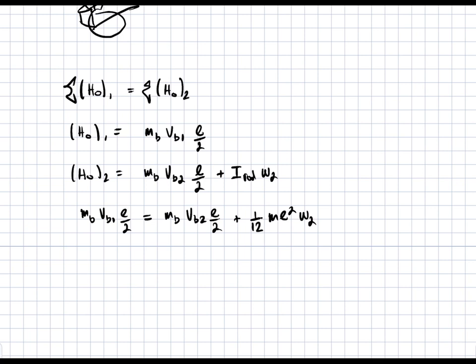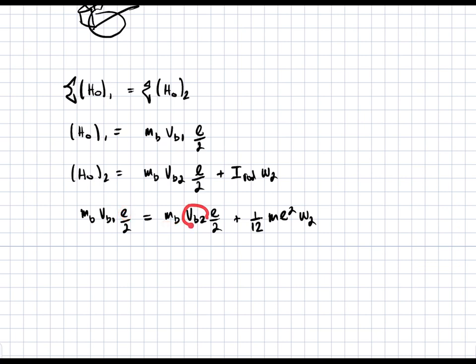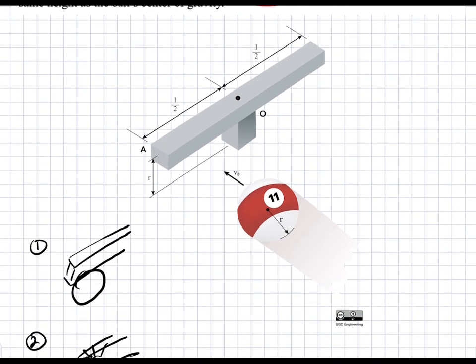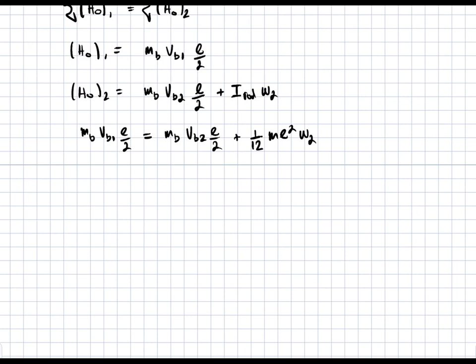We are given V_b1 and the mass and length. We don't know V_b2, the ball's velocity right after impact, but we can find it using the coefficient of restitution. We are solving for omega_2 as our main unknown.